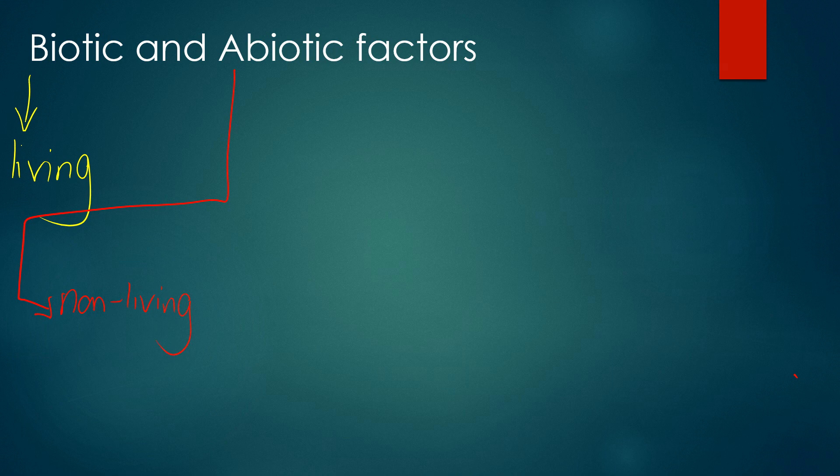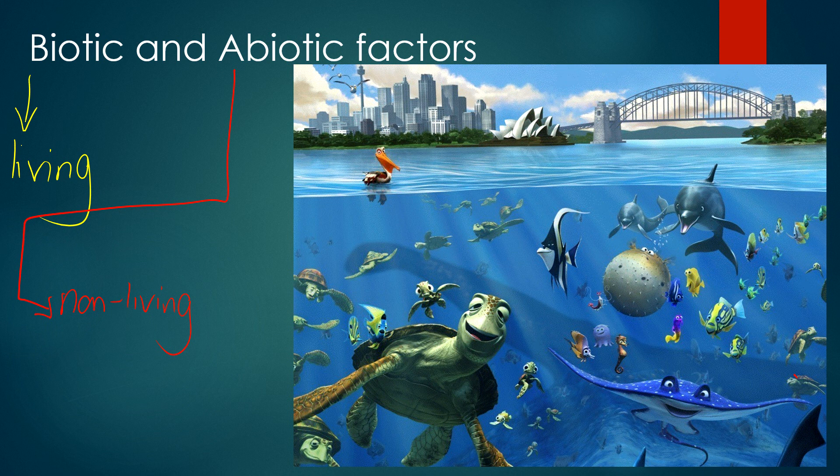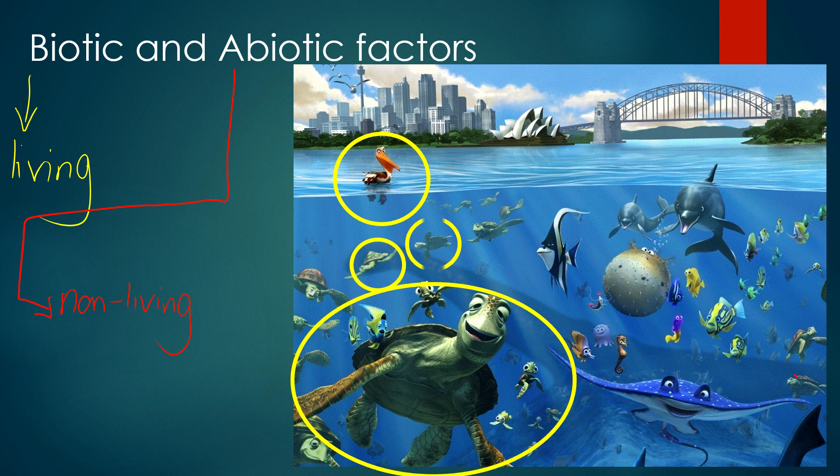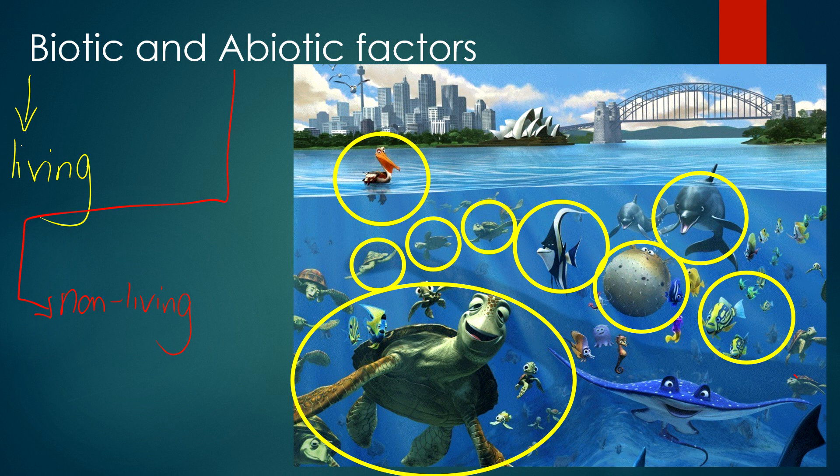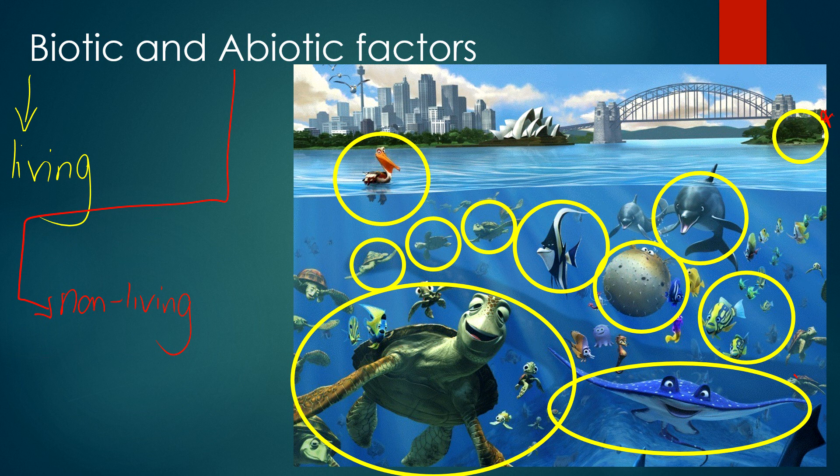So if we use Finding Nemo as an example, the living factors include anything that can be considered alive. For example, the pelican, all the turtles and other living organisms that are in Nemo's ecosystem. We mustn't forget plants as well, as shown in the top right hand corner here. Plants are living factors that affect ecosystems.